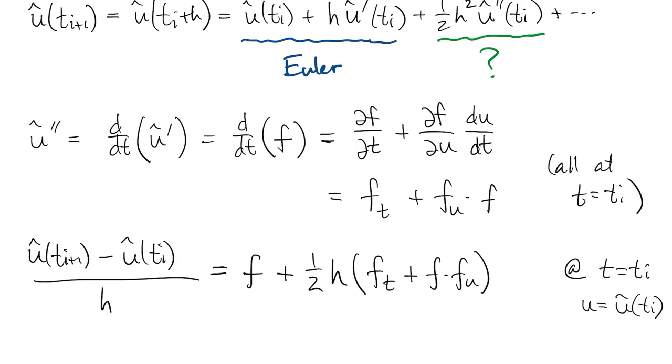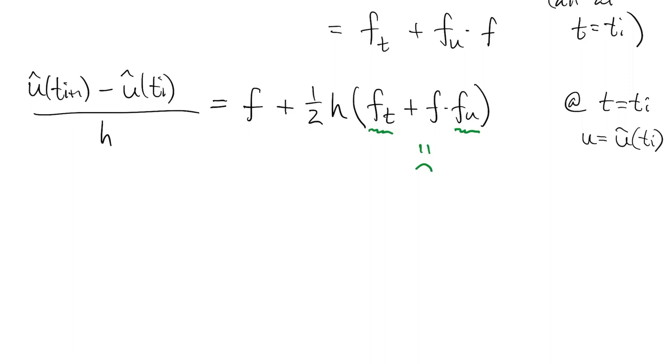In practice, there's no way we want to actually derive and code those partial derivatives of the function f in every problem. We'll be much happier if we find a way to approximate them instead. As long as we get the second order accuracy overall, we'll still be ahead of Euler.